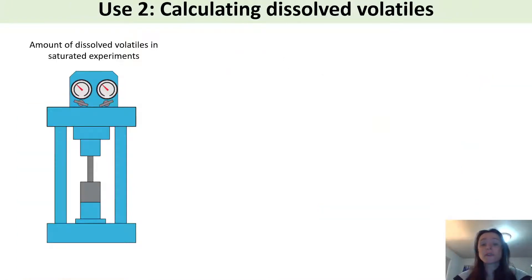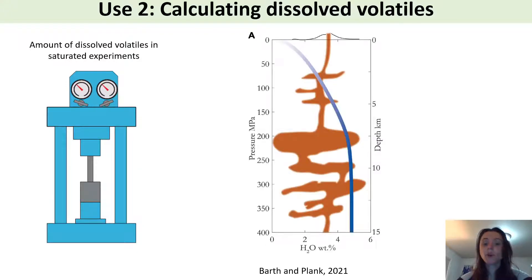A second reason we might want to model volatile solubility is to calculate the amount of dissolved volatiles. So for example say you run a water saturated experiment at a given temperature and pressure you might want to know how much water you expect in your experimental glasses. Or another example here is a beautiful paper by Anna Barth and Terry Planck looking at embayments and something you might want to do for example is perhaps plot how water would change with pressure in your volcanic system.